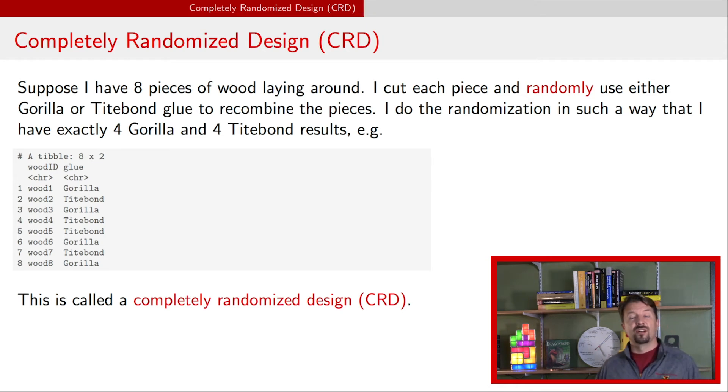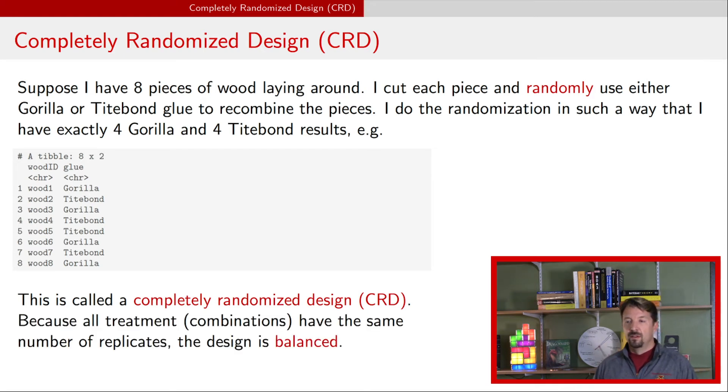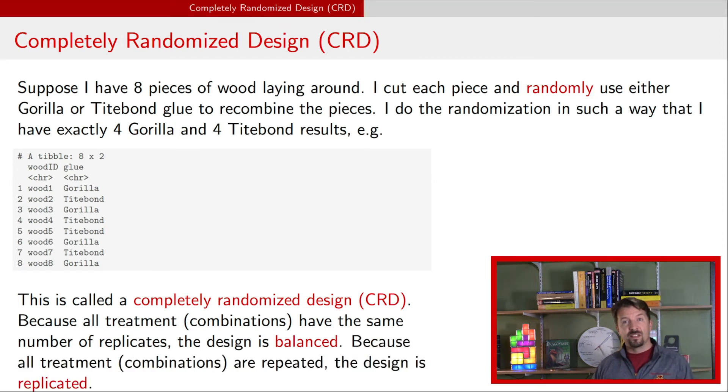If this is the structure of your experiment this is called a completely randomized design so just randomly assign that glue which is the treatment in this case to the experimental units those eight pieces of wood. If all of the treatments have the same number of replicates then the design is balanced and you can see in these data we have four Gorilla we have four Titebond so it is a balanced design. Because all those treatment combinations are repeated the design is called replicated and so we might say this is a completely randomized design with replication. The balanced is typically implied. If it were not balanced then we would say it's unbalanced.